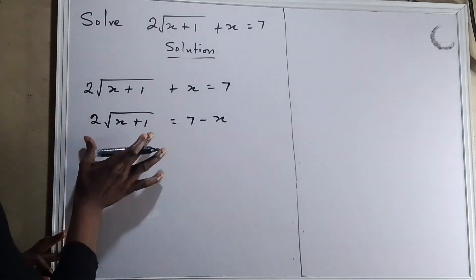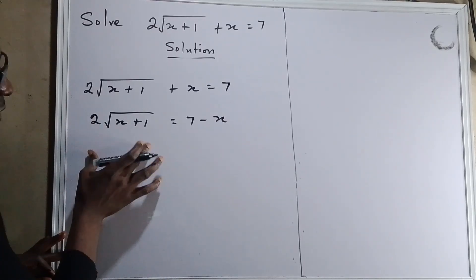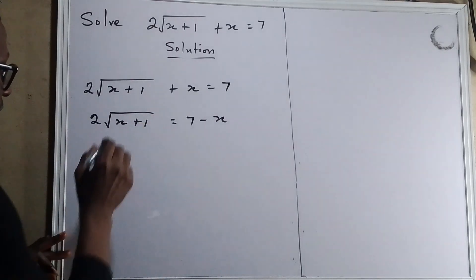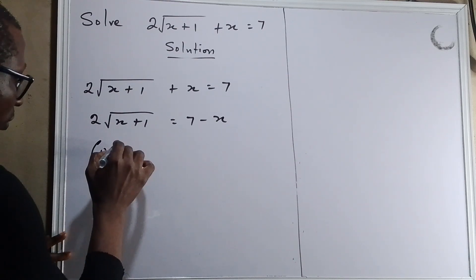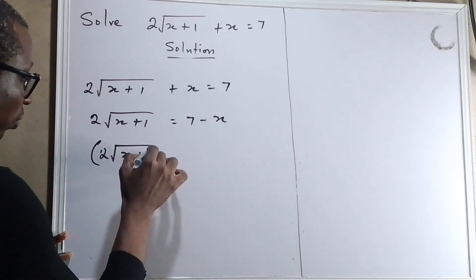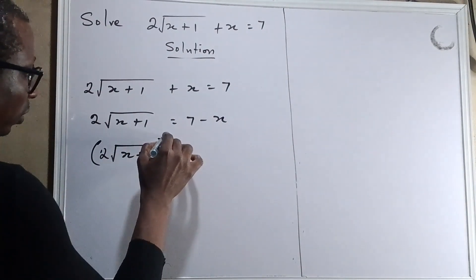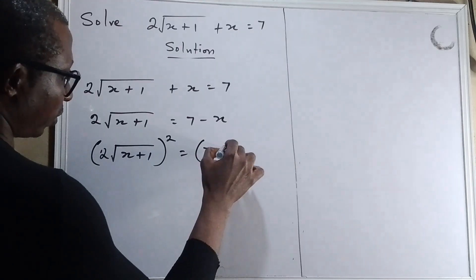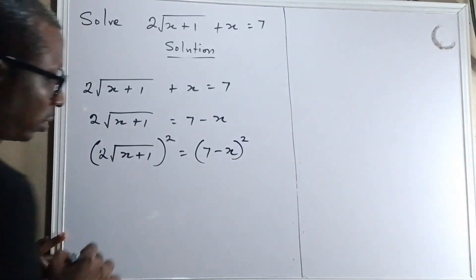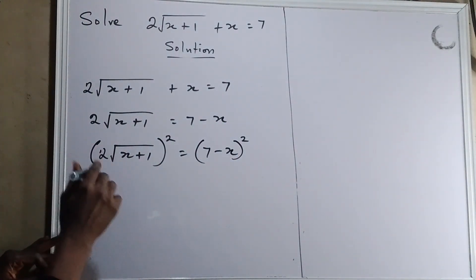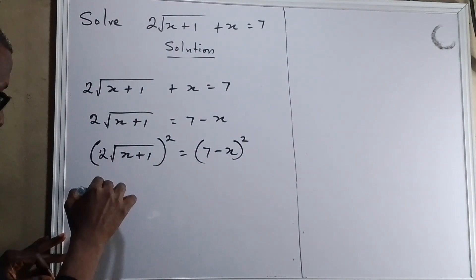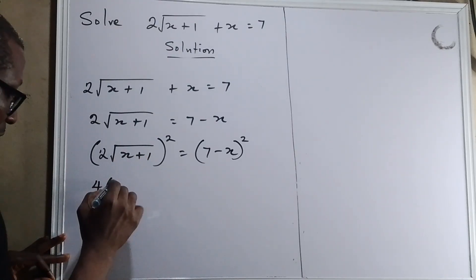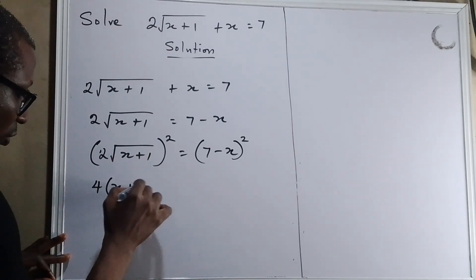Now you square both sides so that we get rid of this square root. So we have 2 square root of x plus 1, squared, equals to 7 minus x, squared. When you square 2 you have 4, and when you square the square root you have x plus 1.